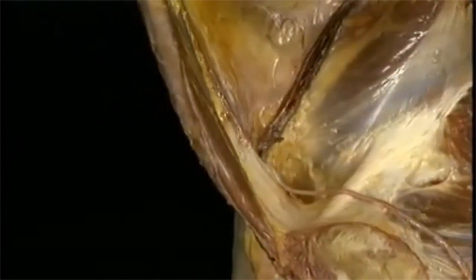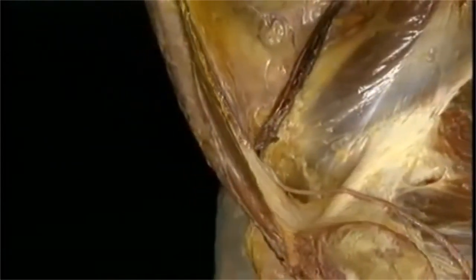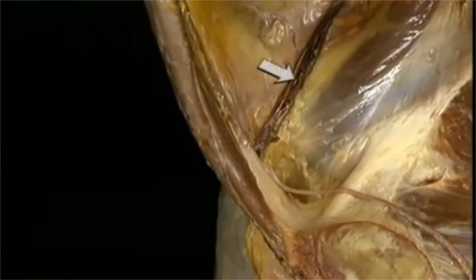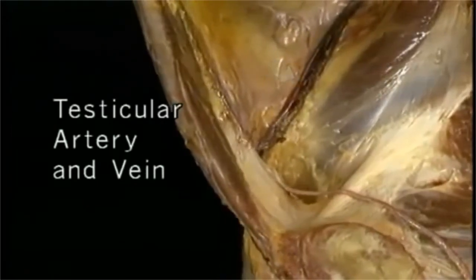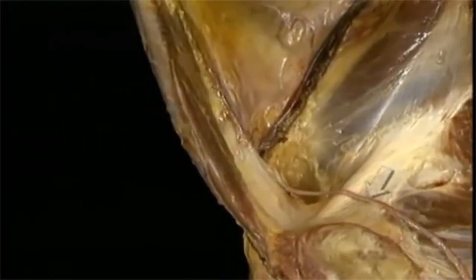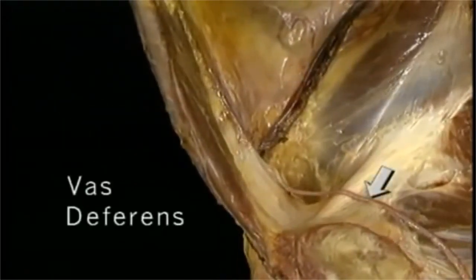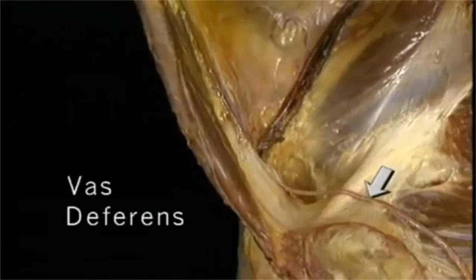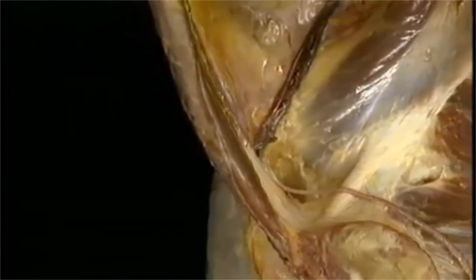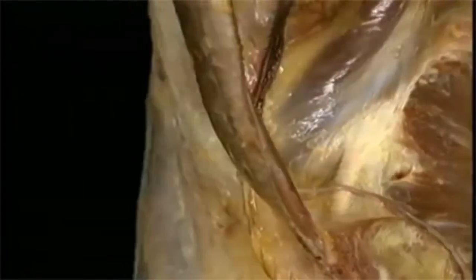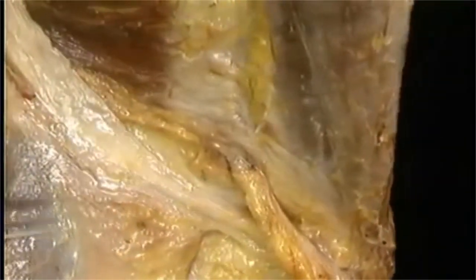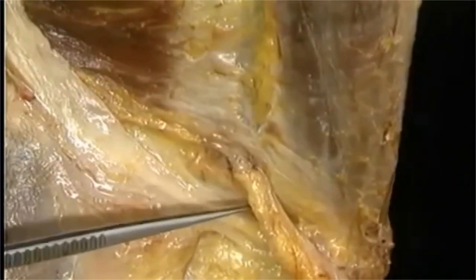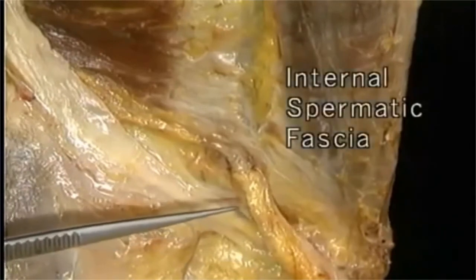The structures that pass through the deep inguinal ring and into the spermatic cord are the blood vessels to the testis — the testicular artery and vein — and the vas deferens, which passes over the pelvic brim and into the pelvis. Emerging from beneath transversus, the vas deferens and the blood vessels are surrounded by this coating of internal spermatic fascia.